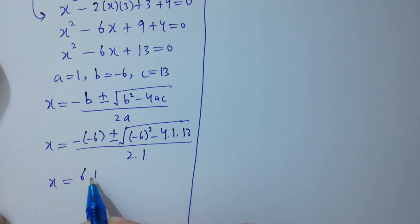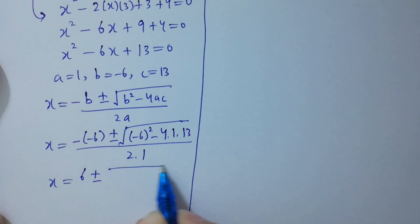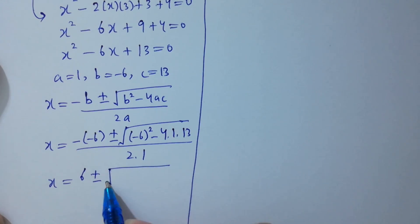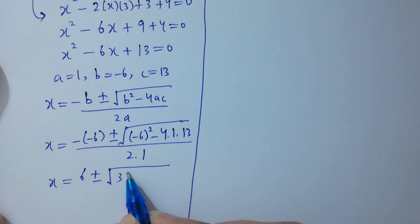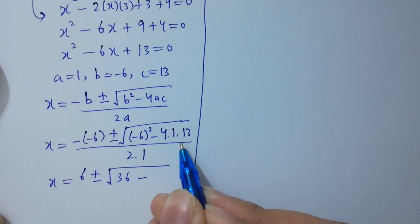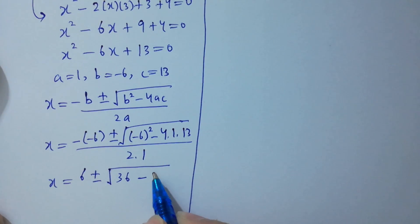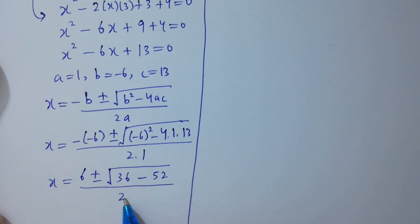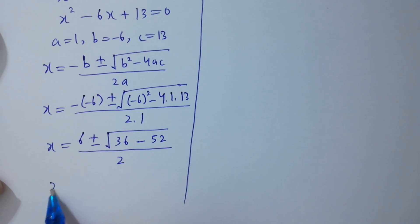x equals 6 plus or minus square root of (36 minus 52) over 2.